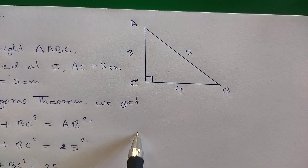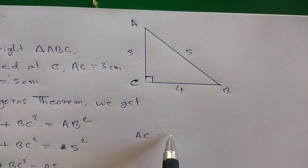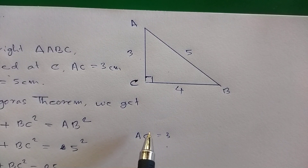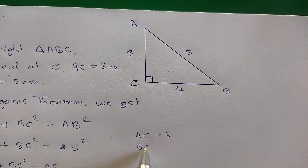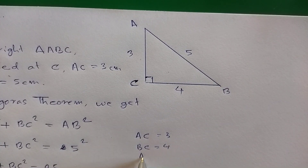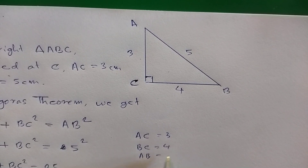So: AC value is 3, BC value is 4, and AB value is 5.